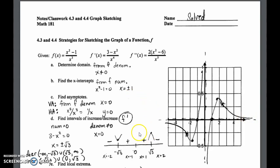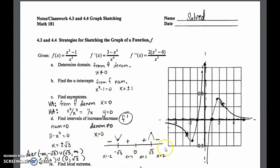Next we're going to look at the intervals for increasing and decreasing, focusing on the first derivative. The two places we look are: set the numerator equal to zero, and set the denominator equal to zero — because when the denominator equals zero, the derivative does not exist. We solve 3 − x² = 0, giving x = ±√3. So we have three values: ±√3 and zero, and we put them on the number line.